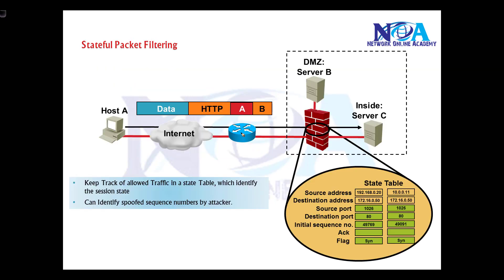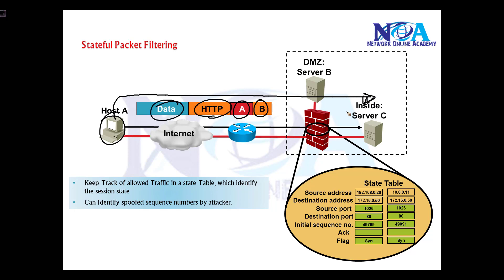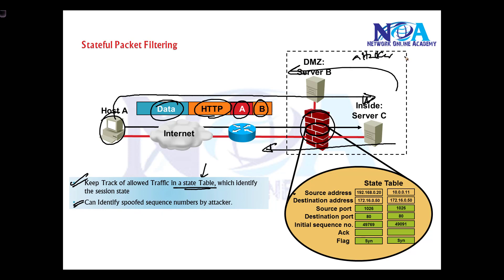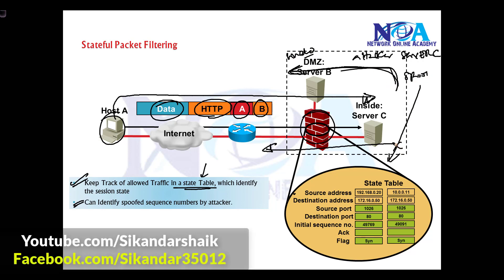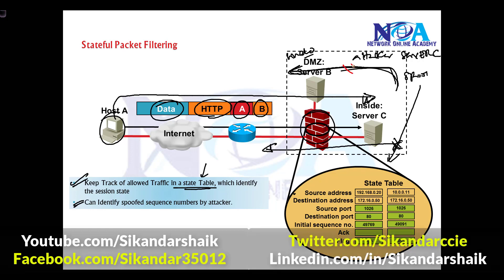When the user initiates a request with source address, destination address, data, protocol, and other information, the firewall writes those entries in the session table. When traffic returns, it must match those session entries. Firewalls track all traffic allowed to the internet in the state table, identifying session state. This also helps detect spoofing — if an attacker spoofs as a valid server, the traffic won't match the session database and will automatically be dropped.